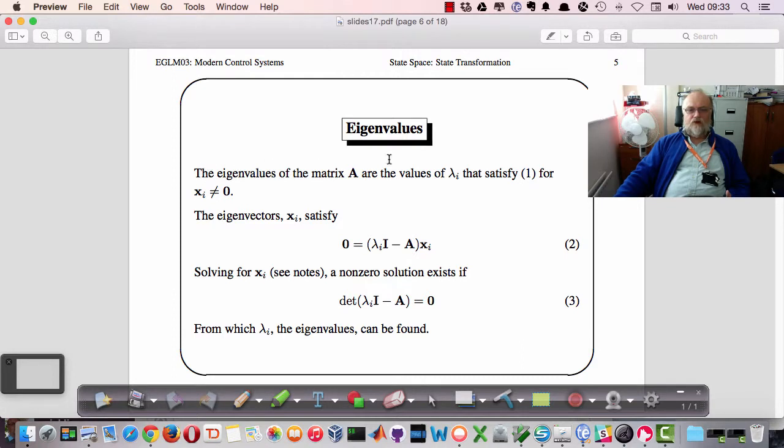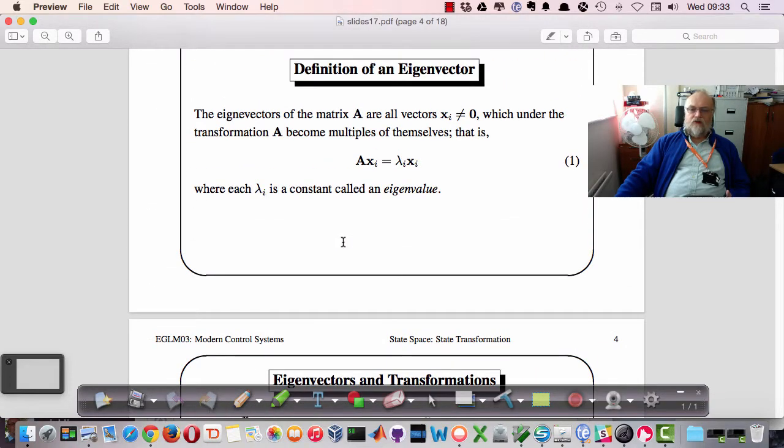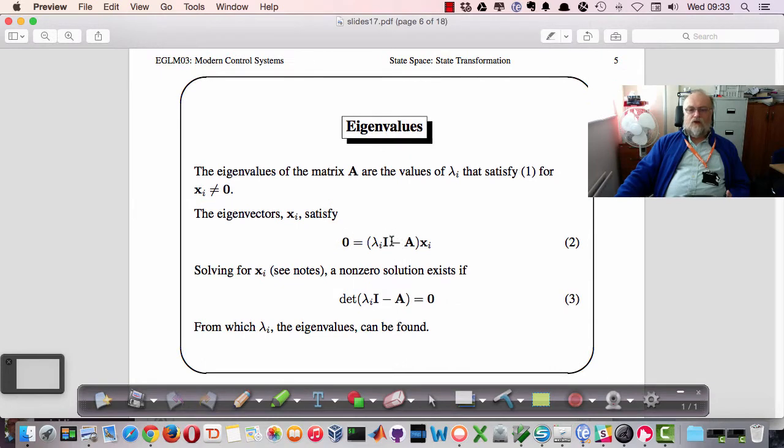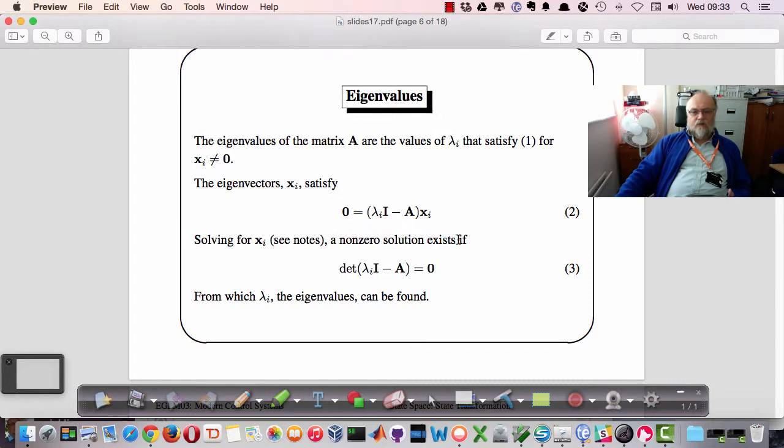So because of the equation that we started with, we can write down the equation for lambda I, just by rearranging the equation slightly, and then lambda I minus A times x must equal zero. Basically that's just a rearrangement of this equation. And we're using I here as the identity matrix so that we can do effectively multiplication by one in the vector space. And if we solve for x, we get a non-zero solution if this term here, given that x is not zero, if this term is not zero as well, and that's not zero providing the determinant of this is equal to zero.